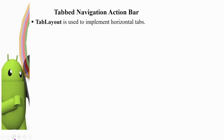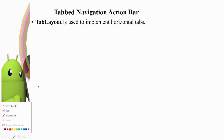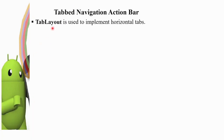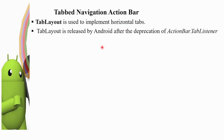If we use TabLayout, we implement the tab navigation in the action bar. TabLayout is used to implement horizontal tabs. TabLayout was released by Android after the deprecation of the Android ActionBar.TabListener.